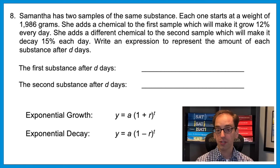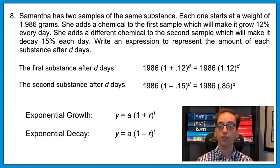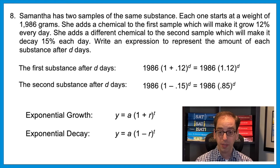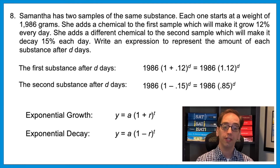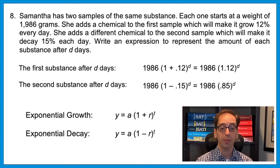For the first substance growing 12%: initial amount a is 1,986, and one plus the rate is 1 plus 0.12, to the power of d. That gives 1,986 times 1.12 to the d. For decay at 15%: it's one minus 0.15, so the expression is 1,986 times 0.85 to the power of d.